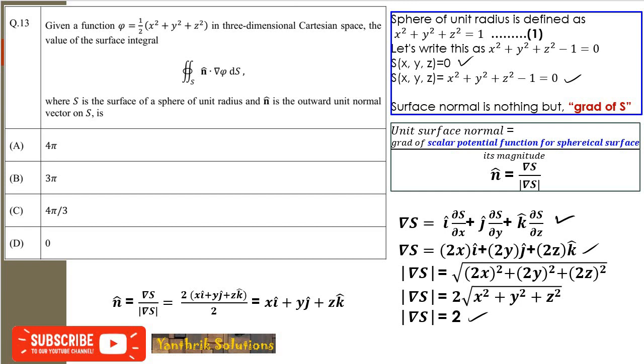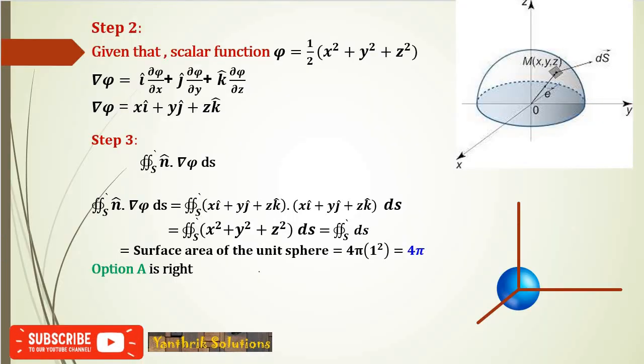So n̂ equals del S divided by |del S|, which gives the unit surface normal. Next, ∇φ, the gradient, is x i + y j + z k. The surface integration involves ∇φ · n̂ dS.